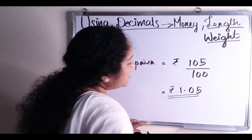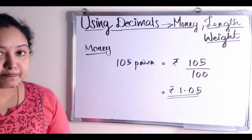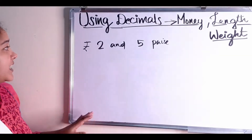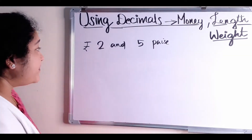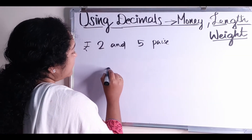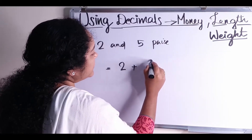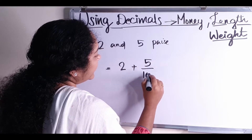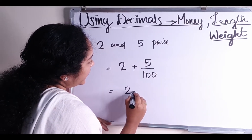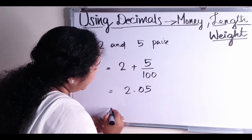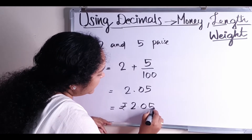This is the decimal notation of rupees. The next question: how to write 2 rupees and 5 paise in decimals. 2 rupees means 2, plus 5 paise means 5 by 100. That is equal to 2.05. The answer is rupees 2.05.